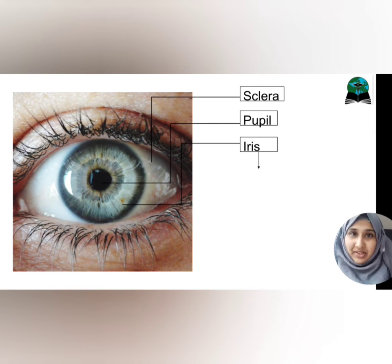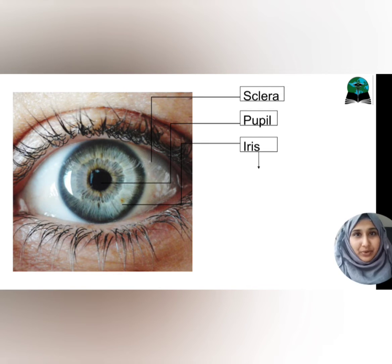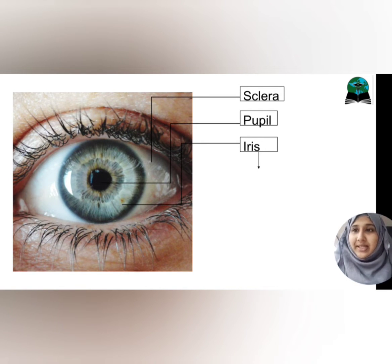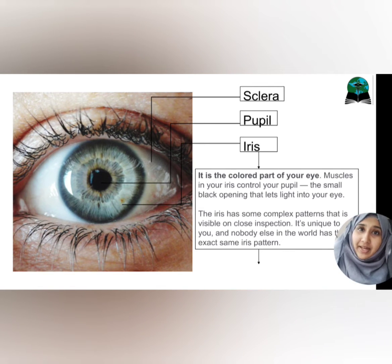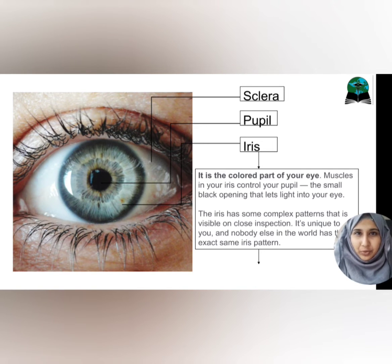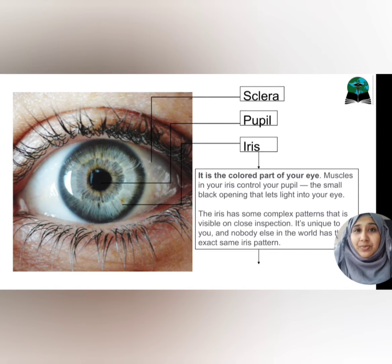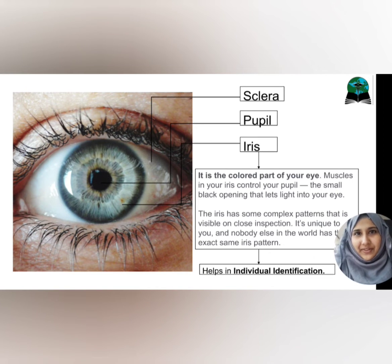The iris is the thin pigmented muscular layer which contracts and expands to control the amount of light that enters through the pupil to focus on the retina. It is placed between the cornea and the lens. If you observe the iris carefully, you will see that it has complex tissue patterns which are unique for every person, so much so that it is about 10 times more accurate than fingerprinting for individual identification.